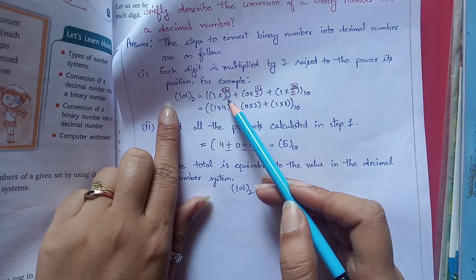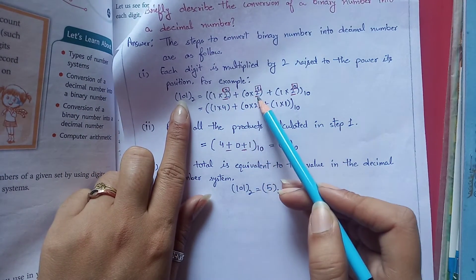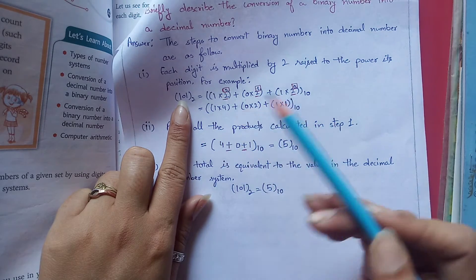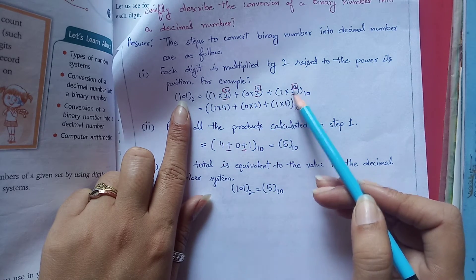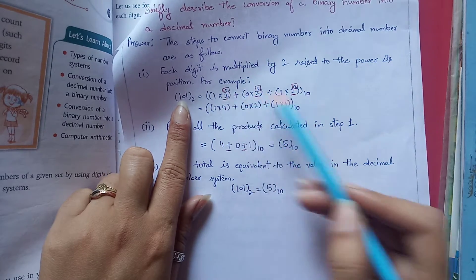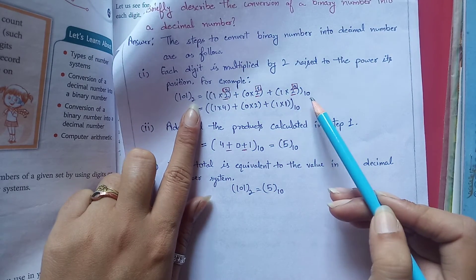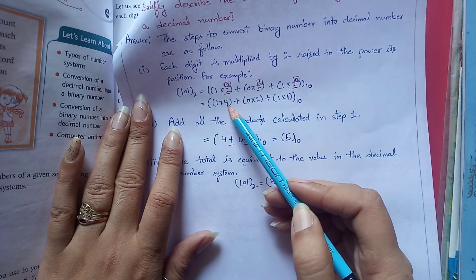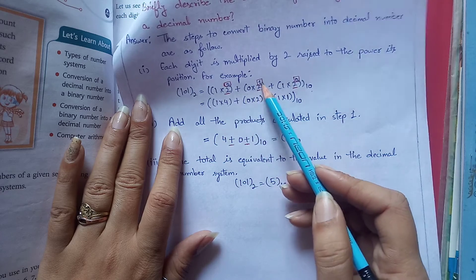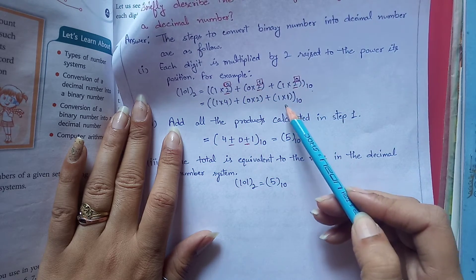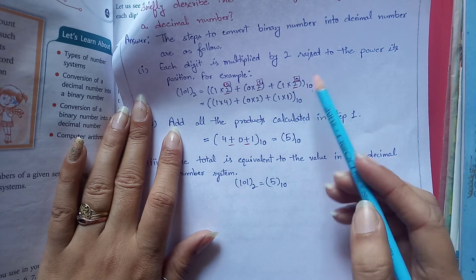I have to multiply each digit with 2 raised to the power of its position. Rightmost power is 0, then 1, then 2. And the total base is 10 because I have to convert to decimal. So when we solve this: 1 into 2 raised to power 2 is 4, plus 0 into 2 raised to power 1 is 0, plus 1 into 2 raised to power 0 is 1. If the power of any number is 0, it is 1.